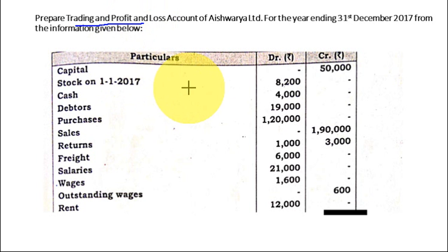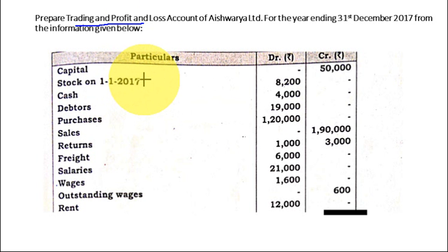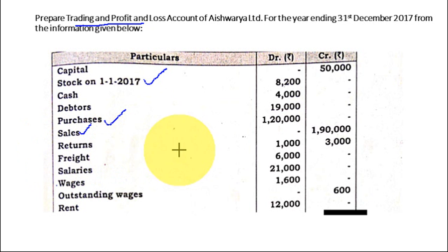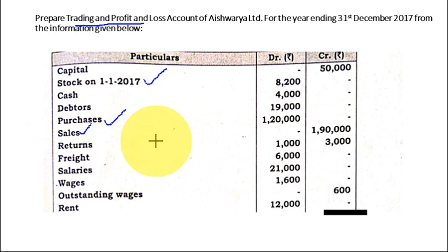Now one by one, let us identify each item. Capital — does it come in Trading and Profit and Loss account? No, it goes to the balance sheet. Opening stock comes in the Trading account. Cash goes to balance sheet. Debtors — asset, balance sheet. Purchases come in the Trading account. Sales also come in the Trading account. Returns — they haven't mentioned sales return or purchase return specifically, but figures are given on both sides.